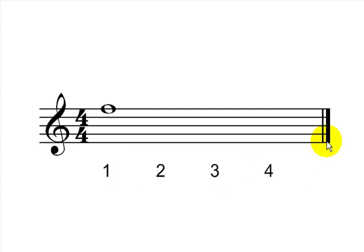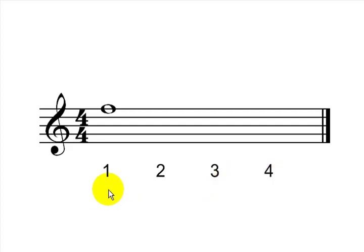Now, you will hear the metronome in the background. First of all, let's listen to the whole note, and here underneath the staff you have the counts. I will play this 2 times — the first time just with the metronome, and the second time I will count the beats along. Let's listen.